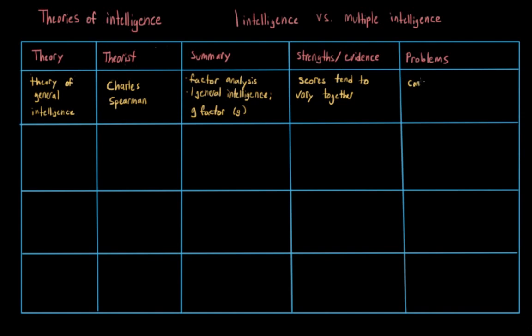However, this idea was controversial then, and it's still controversial now. When you really think about it, human abilities are incredibly diverse. Do we really think that one single factor could account for all of them?